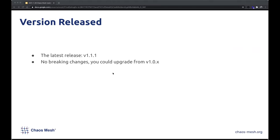You can just upgrade your Chaos Mesh from 1.0 to 1.1 to try the new features. We use an X.Y.Z style versioning scheme: incrementing Z means bug fixes, incrementing Y means new features, and incrementing X means big updates, refactoring, or breaking changes.